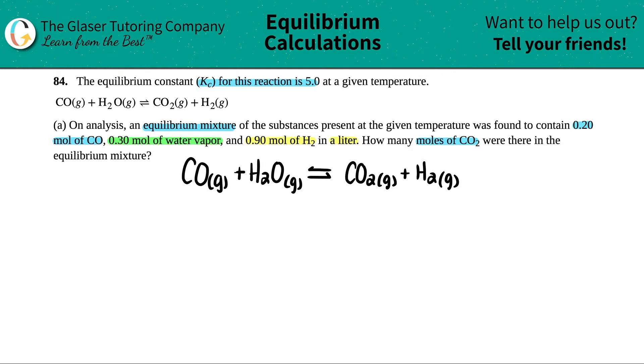Now they told us this was at equilibrium already, right? So we have equilibrium values. They didn't tell me any start values, so I don't have to write an ICE table - I can just go straight to my equilibrium values. Let's write out what they give me: 0.20 moles of CO, 0.30 moles of water vapor (H2O gas is water vapor, aka steam), and 0.90 moles of H2. They're asking for how many moles of CO2, so I'll label this as x.